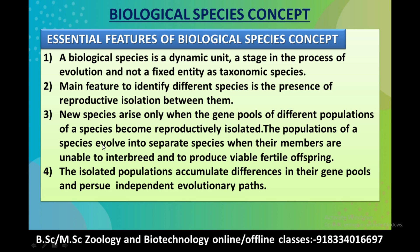The populations of a species evolve into separate species when their members are unable to interbreed and to produce viable fertile offspring. And the fourth and last characteristic feature of biological species concept is that the isolated populations accumulate differences in their gene pools and pursue independent evolutionary paths.